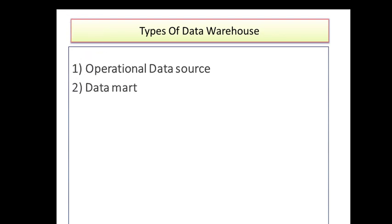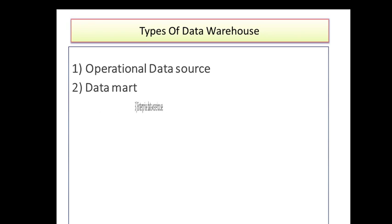The second type is the Data Mart, which is nothing but a slice of a data warehouse. The third type is the Enterprise Data Warehouse, which manages all the needs of an enterprise or organization.